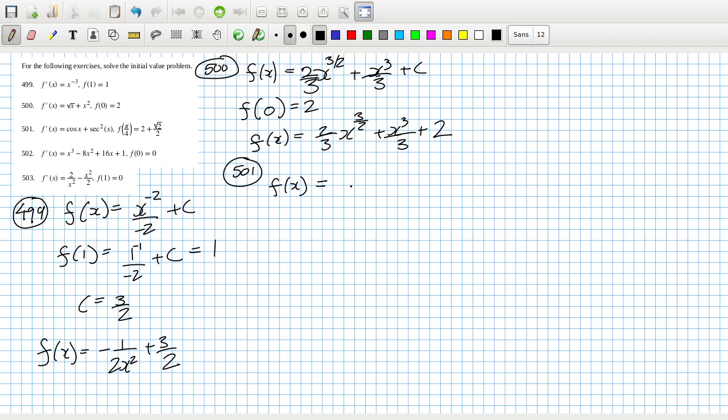f(x): anti-differentiating cos becomes sine, sec squared becomes tan plus c. We have f(π/4) that will be sine π/4 which is 1 over root 2 plus tan π/4 that's 1 plus c.